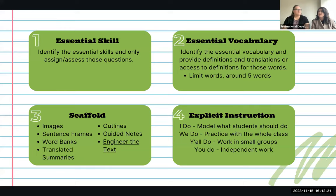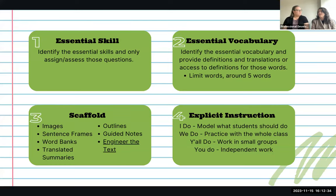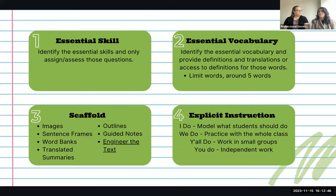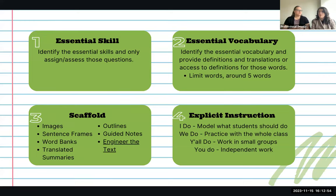Step four is explicit instruction. With every task, especially for multilingual learners, they need to see the task modeled and have an exemplar. Start with 'I do' — the teacher models — then 'we do' together as a class, then 'you all do' in groups, then students work independently. You'll be pleasantly surprised how much students can do based on that practice and modeling.